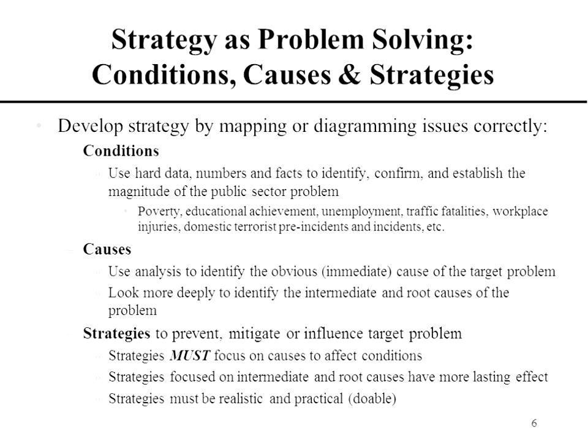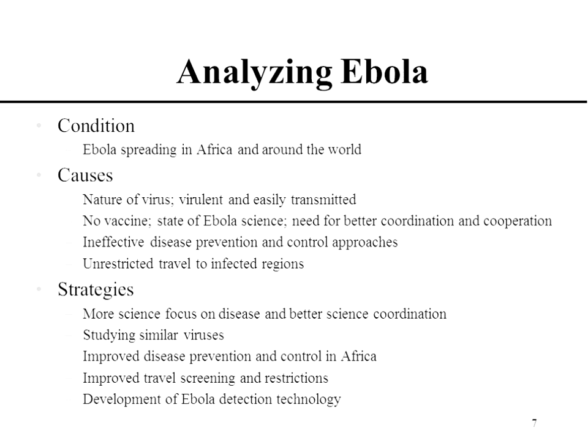If you fix the root cause of your problems, the conditions tend to improve or go away. Every cause that has been identified needs to have a strategy to mitigate or address it. Strategies must focus on the causes — especially the deepest causes, the closest to the root — and they also have to be realistic and practical. Here is a way to test this model: if your strategies are working and addressing the causes, the conditions should start to improve. The conditions you identified become the performance measure as to whether your diagnostic method is working. Conditions, causes, remedies or strategies — a very important process to use when developing strategies in the strategic planning process.